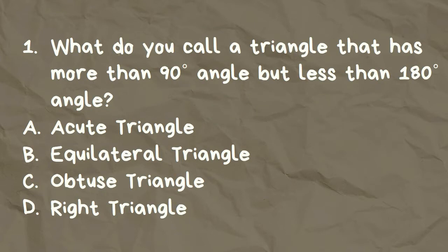What do you call a triangle that has more than 90 degrees angle but less than 180 degrees angle? A. Acute triangle, B. Equilateral triangle, C. Obtuse triangle, D. Right triangle.